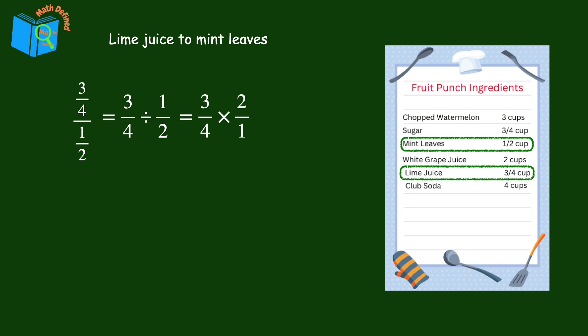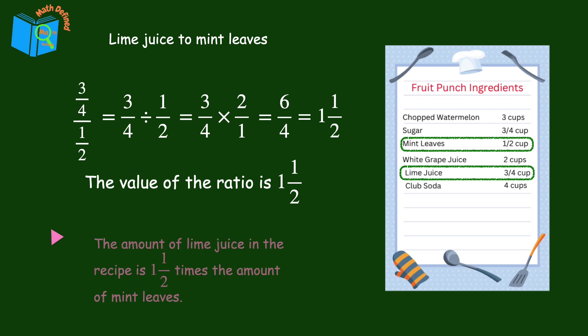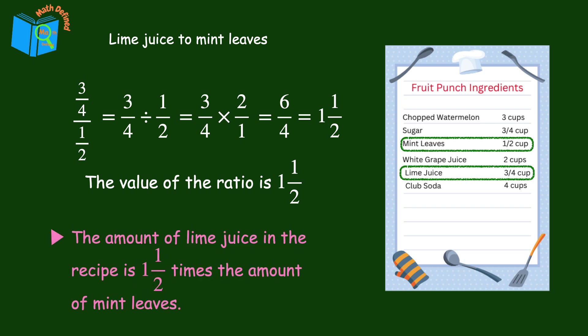Multiplying by the reciprocal, we get six-fourths, which simplifies to one and a half. The value of the ratio is one and a half. So the amount of lime juice in the recipe is one and a half times the amount of mint leaves.